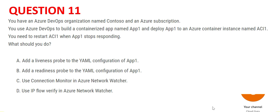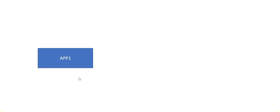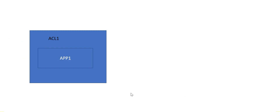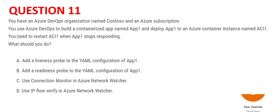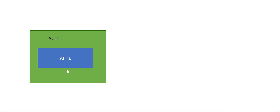Let's focus on the core content of Question 11. You have App1 inside ACL1 — the green box is the container and App1 is inside it. The question says we should be able to restart the container if App1 stops responding. So the container should be able to restart if the app inside it — the blue box — is not responding.